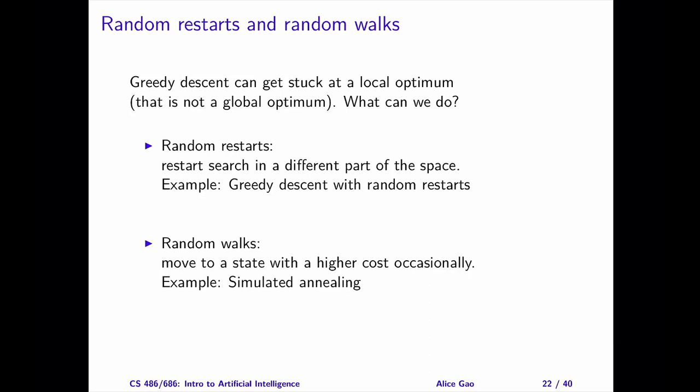The second type of random move is a random walk. A random walk means we will move to a random neighbor in our local neighborhood. By doing this, it is possible to move to a neighbor that's worse than the current state. Greedy descent does not allow random walks. In the next video, I will discuss another algorithm called simulated annealing, which makes use of random walks to explore the search space.